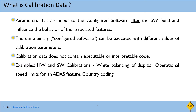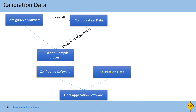An example of software calibration is the operational speed limits of an ADAS feature such as adaptive cruise control or automatic emergency braking. A calibration such as country coding of the product may affect both software and hardware. You can see how the calibration data causes the configured software to behave differently, and the final application software behaves according to the calibrated values.